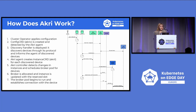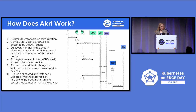Here is the workflow of how Akri works. The cluster operator first applies the Akri configuration. The config CRD is created and detected by the agent. The discovery handler specified in the configuration is deployed and finds those devices, then tells the agent of the discovered devices. The agent creates the instance CRD for each discovered device. The Akri controller detects changes in the instances and schedules broker pods for those devices. The broker is allocated, the instance is updated with the reserved slot, the broker pod begins to run, and it establishes a connection with the device.